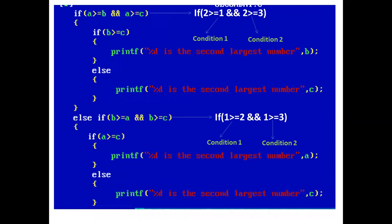Now we have an if condition: if a >= b (2 >= 1) AND a >= c (2 >= 3). We have used the logical AND operator between the two conditions, so if both conditions are true, only then will the if block be executed.